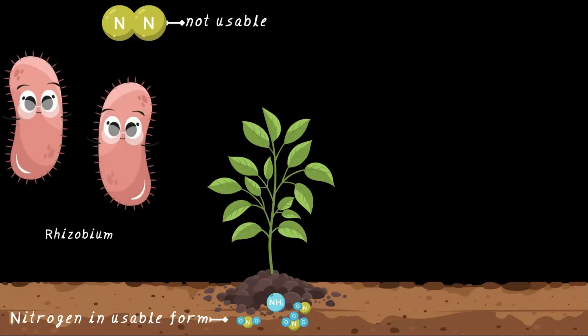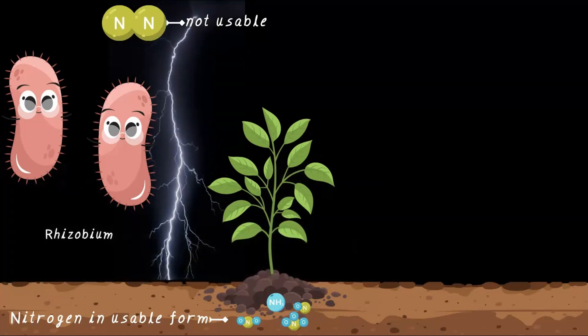The first way is through a special bacterium called rhizobium, which lives in the root nodules of certain types of plants called leguminous plants, like soybean and peas. These bacteria take nitrogen, which is not in usable format from the atmosphere, and convert it into a form that plants can use.